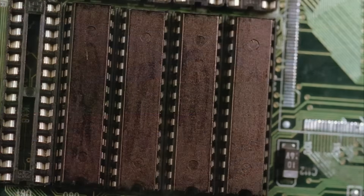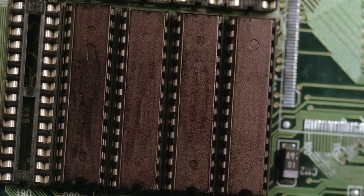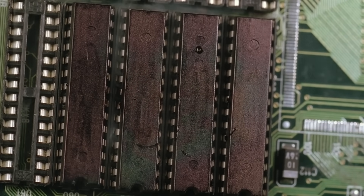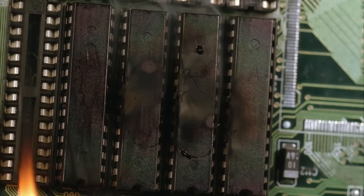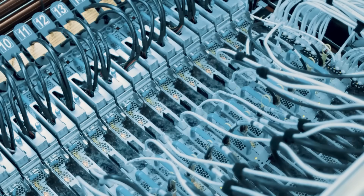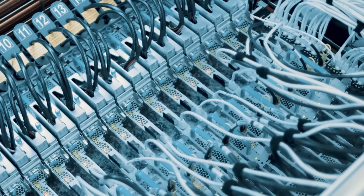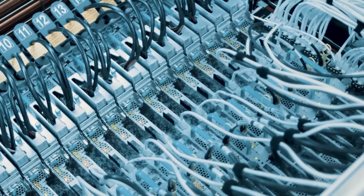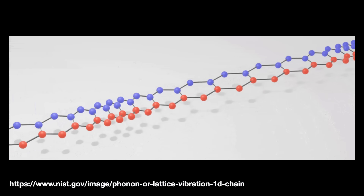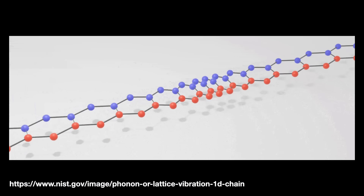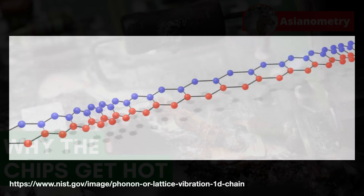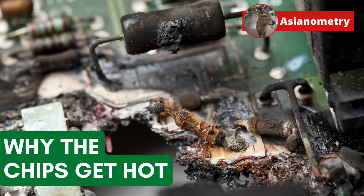Today's leading-edge chips get hot. Like, really hot. And nowadays much work is being done to try and keep them from getting too hot — fancy things like dipping the whole chip into water or oil. But why do the chips get hot? And how does that heat spread? In this video, we explore heat at nanometer scale.